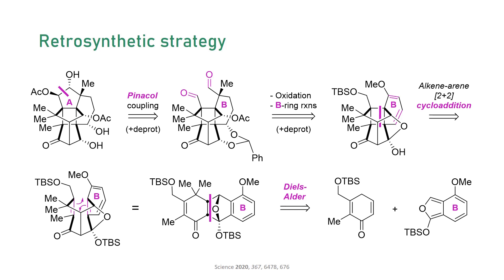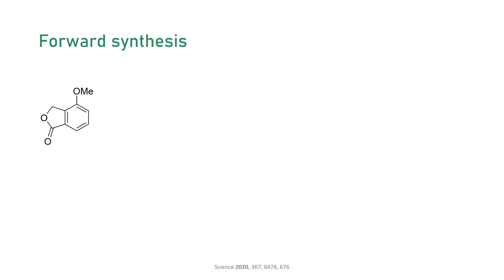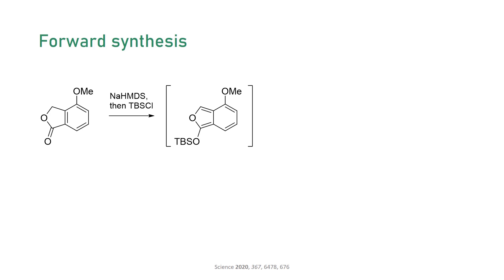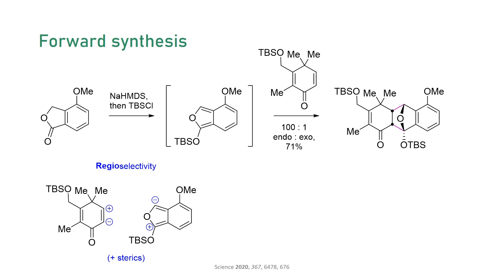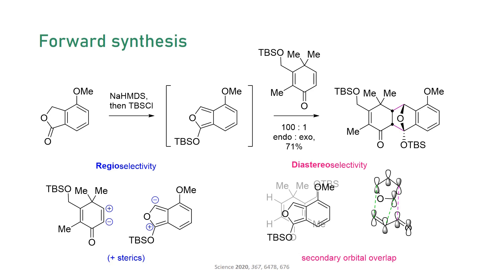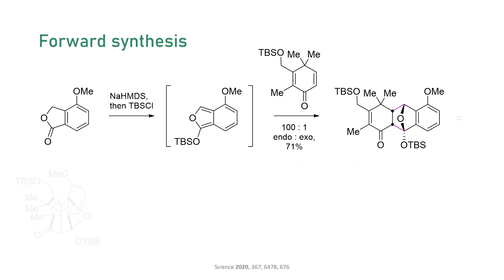Let's look at the forward synthesis now. They initiated the synthesis by converting a lactone into the isobenzofuran and performed a Diels-Alder reaction with a dienophile. The cycloaddition proceeded with high regioselectivity rationalized through electronics, as well as excellent diastereoselectivity, affording the endo isomer through favorable secondary orbital overlap between the carbonyl group and the diene. Getting the endo isomer is essential to enable the subsequent photoaddition, because the two olefins are only in close proximity in this configuration — in the exo adduct, the olefins would face two opposite sides.